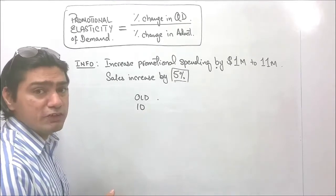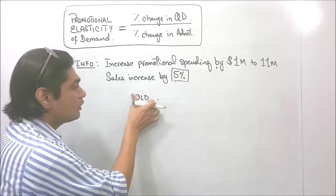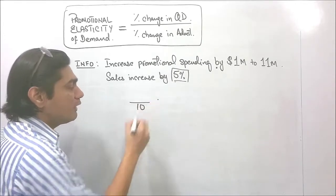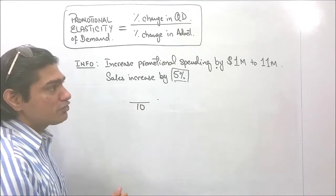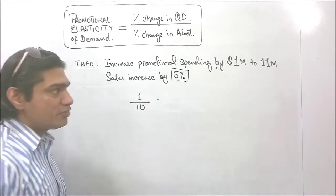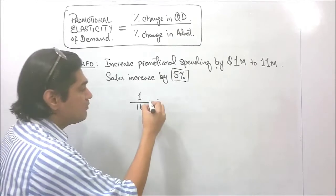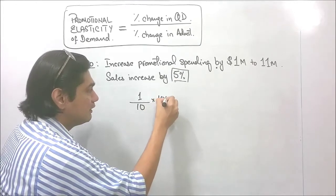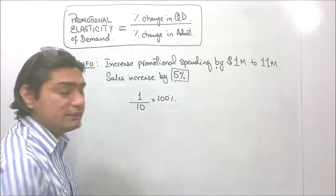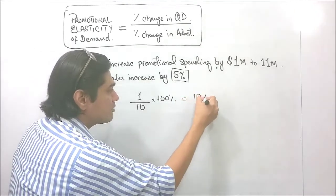Whenever we are calculating rate of change, we take the difference between old and new and divide it by the old. So if the old value is 10 million and it has been increased by 1 million, that means the percentage change will be 10%.